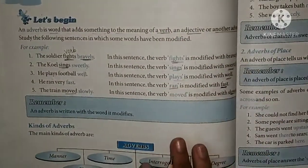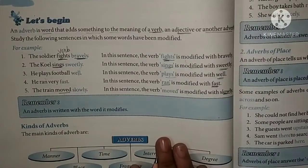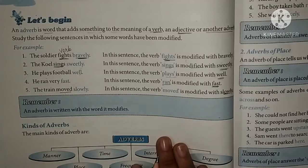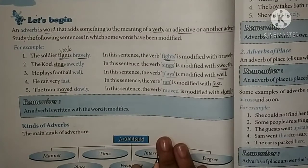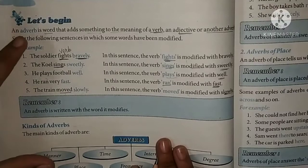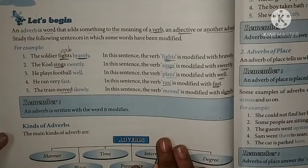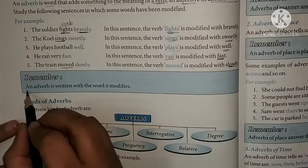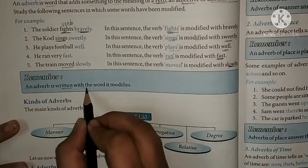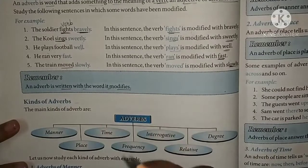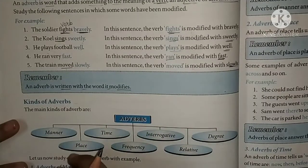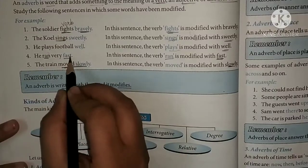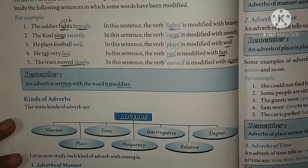From these sentences we get one clear idea: there is a verb, and to further modify it — to say something more about it — that is the job of the adverb. In short, an adverb is written with the word it modifies; it comes right along with the word it modifies.